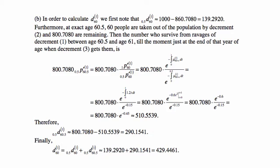The number departing due to decrement 1 between ages 60.5 and 61 is 800.708 minus 510.554, which is 290.154. The total deaths from decrement 1 is the sum of both halves: 139.292 plus 290.154 equals 429.446. While fractional people are a strange result, we keep precision in the calculations and round only for the final answer.